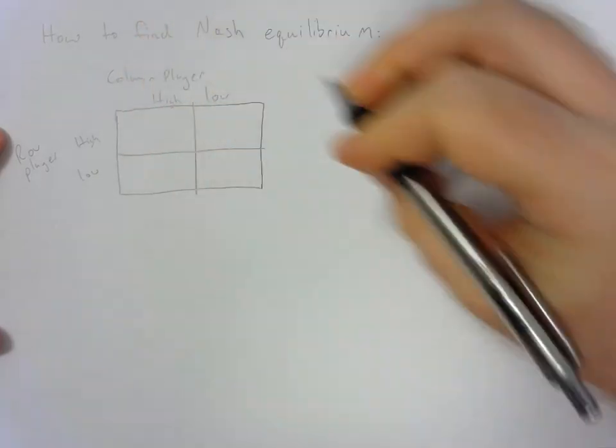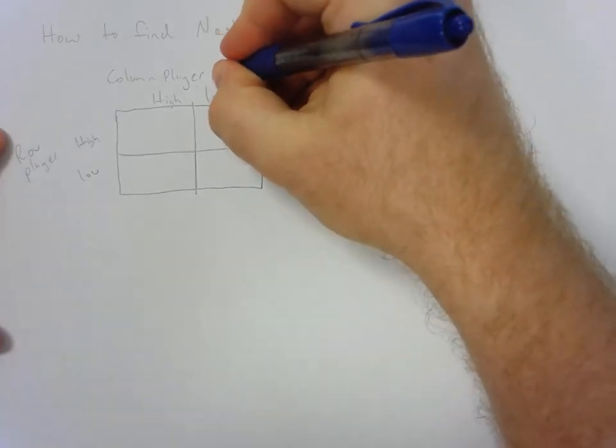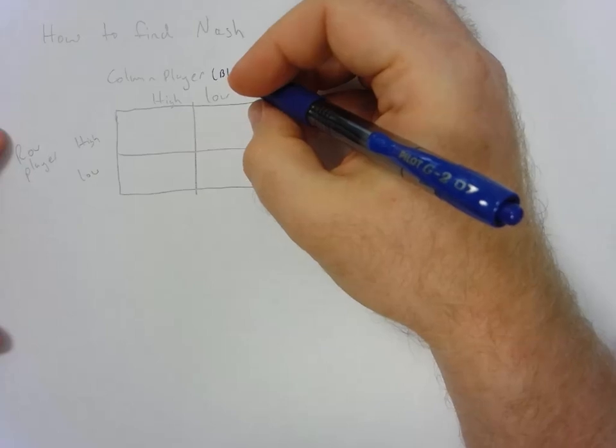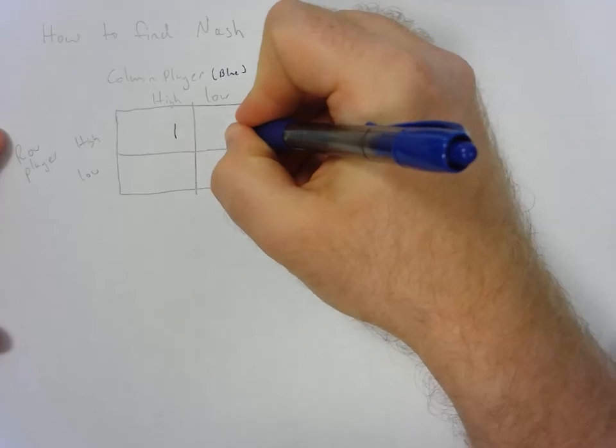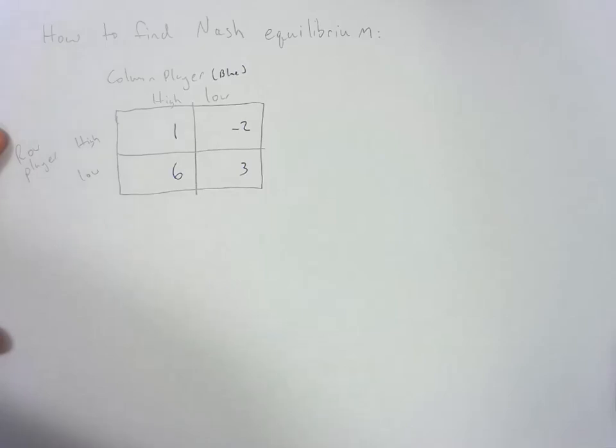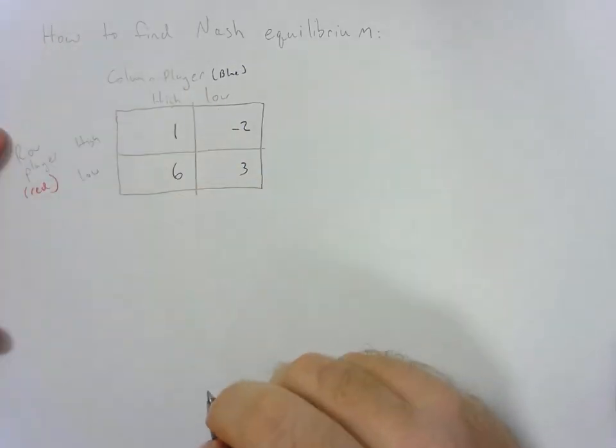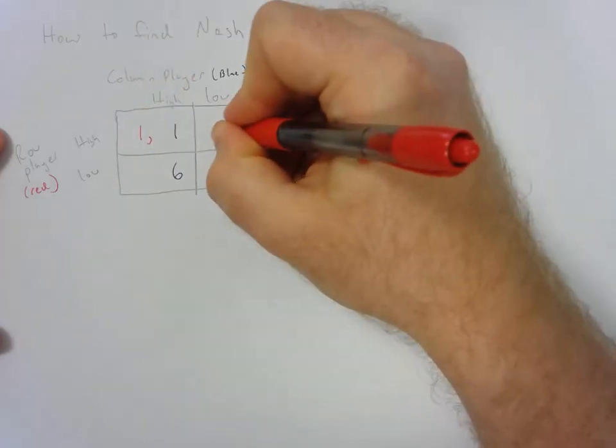So when I talk about finding the Nash equilibrium, this is sort of the setup we have. So I'm going to fill this out real quick. I'm going to make this guy blue and I'll have his payoffs be here, and then we can make the row player red and I will have her payoffs be here.